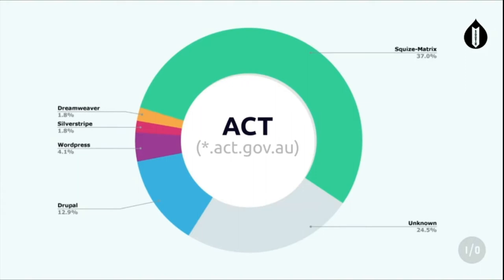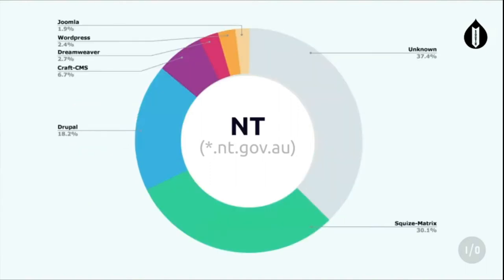ACT - good stuff, you can't be held back. Northern Territory - and here we just see a bit of a smattering, but again Squiz is definitely in the clear.